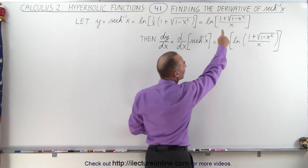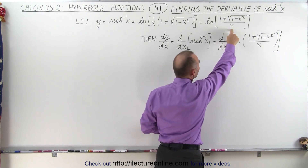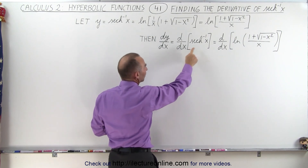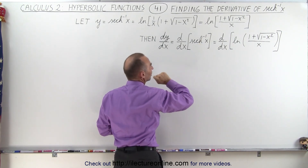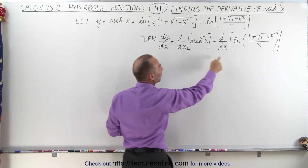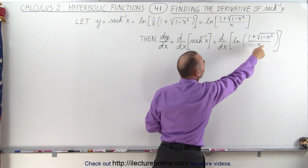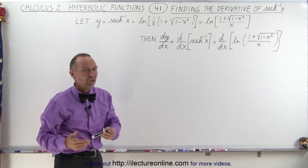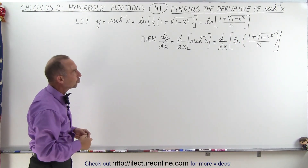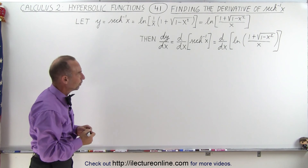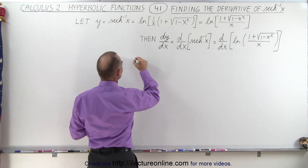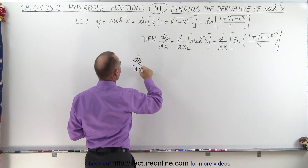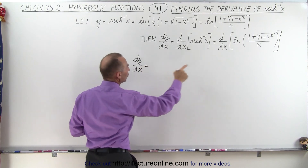It's better to write it in this form because if we're going to take the derivative — which is the derivative of the inverse hyperbolic secant of x — we can take the derivative of that expression as written. It's a quotient, and we're going to use the quotient rule. So dy/dx is going to be equal to...